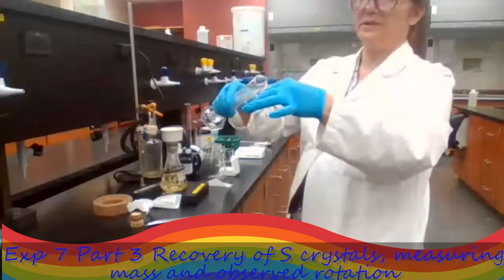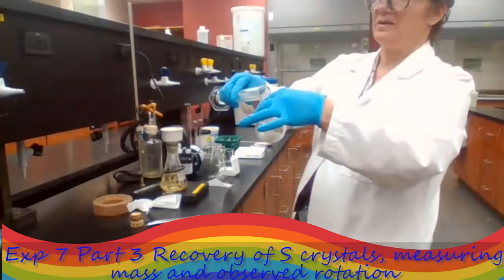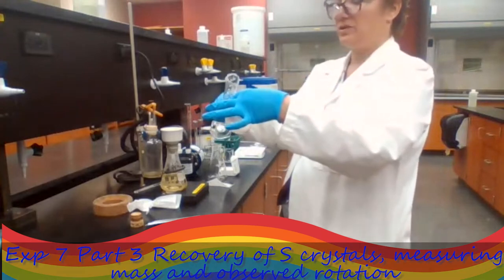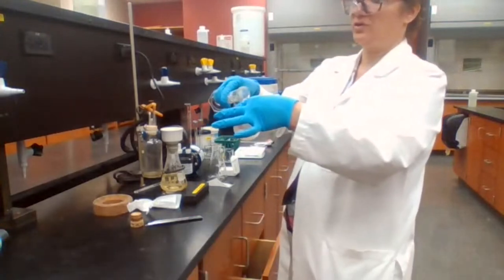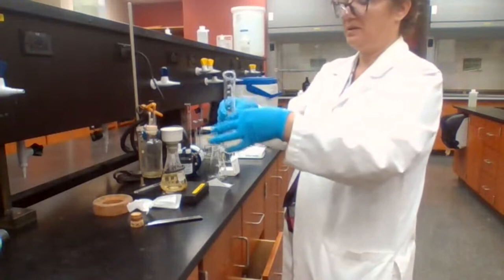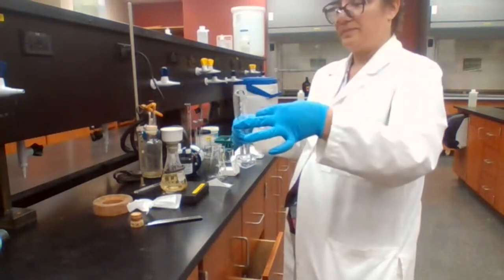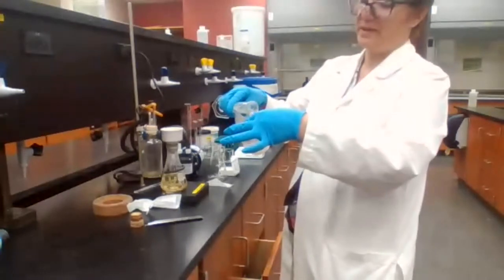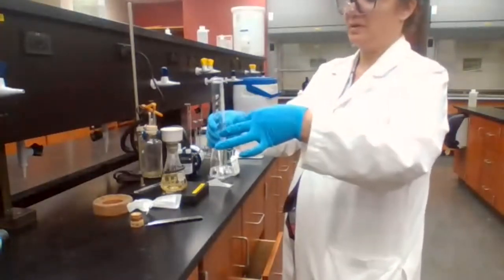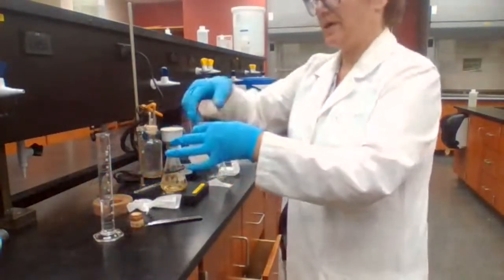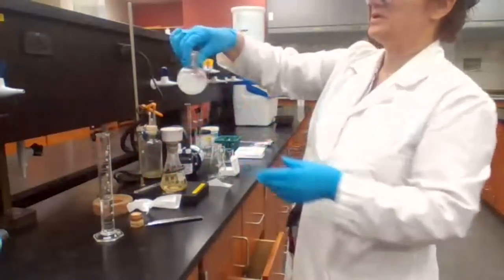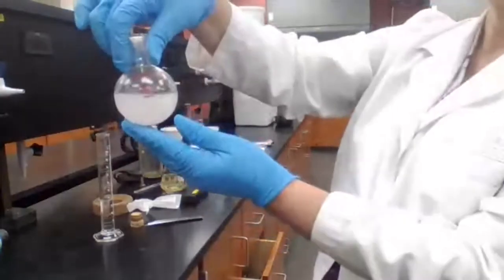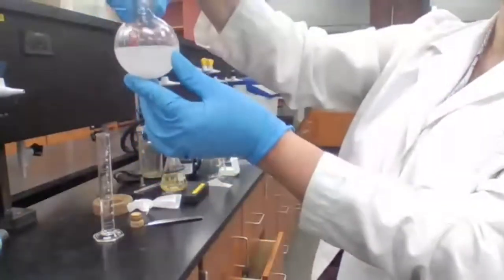I'm going to add 50 milliliters first. If the two layers are forming, it should dissolve and form a second layer. If the second layer doesn't form, then I have to add more sodium hydroxide. But first, I'm going to try adding sodium hydroxide and looking for the second layer.